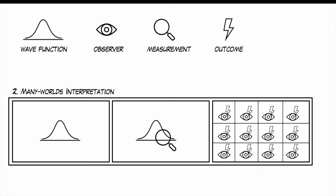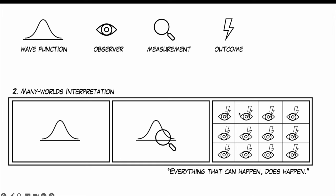Whenever a quantum event occurs, in effect the entire universe splits into different branches. This includes not only the particles that we observe in the event, but also everything that interacts with them, including you yourself as the observer. Observers do not influence the outcome. Rather, each version of you — one in each newly created branch of reality — experiences only one specific outcome, with no awareness of all the other branches. There isn't a choice or assignment of a singular you to one branch, but every possible version of you exists across all these branches.